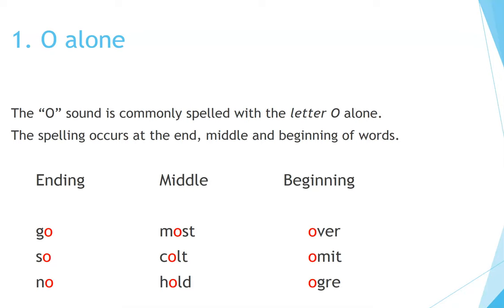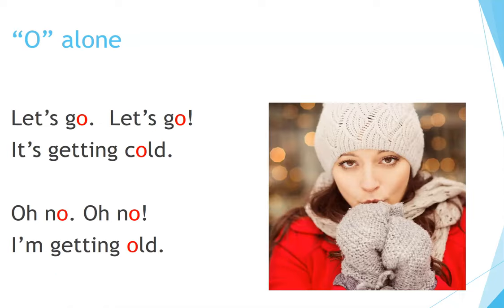Examples of O alone: Go, So, Know — at the end. Most, Cold, Hold — in the middle. Over, Omit, Ogre — at the beginning. O alone. Let's go, let's go. It's getting cold. Oh no, oh no. I'm getting old.